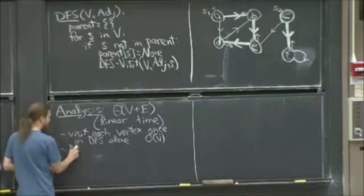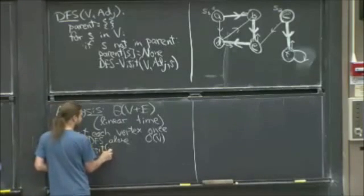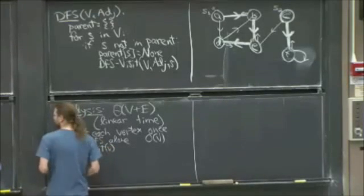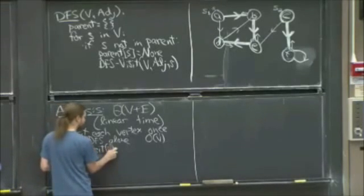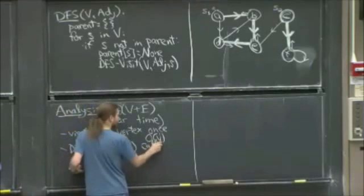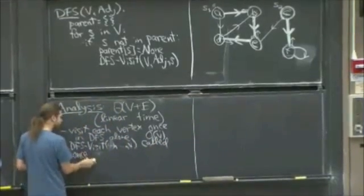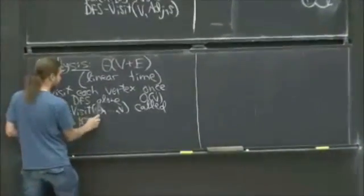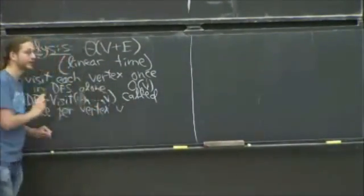So DFS visit, I'm going to just write of V, meaning the last argument here. It's called once, at most once, per vertex V. But it does not take constant time.